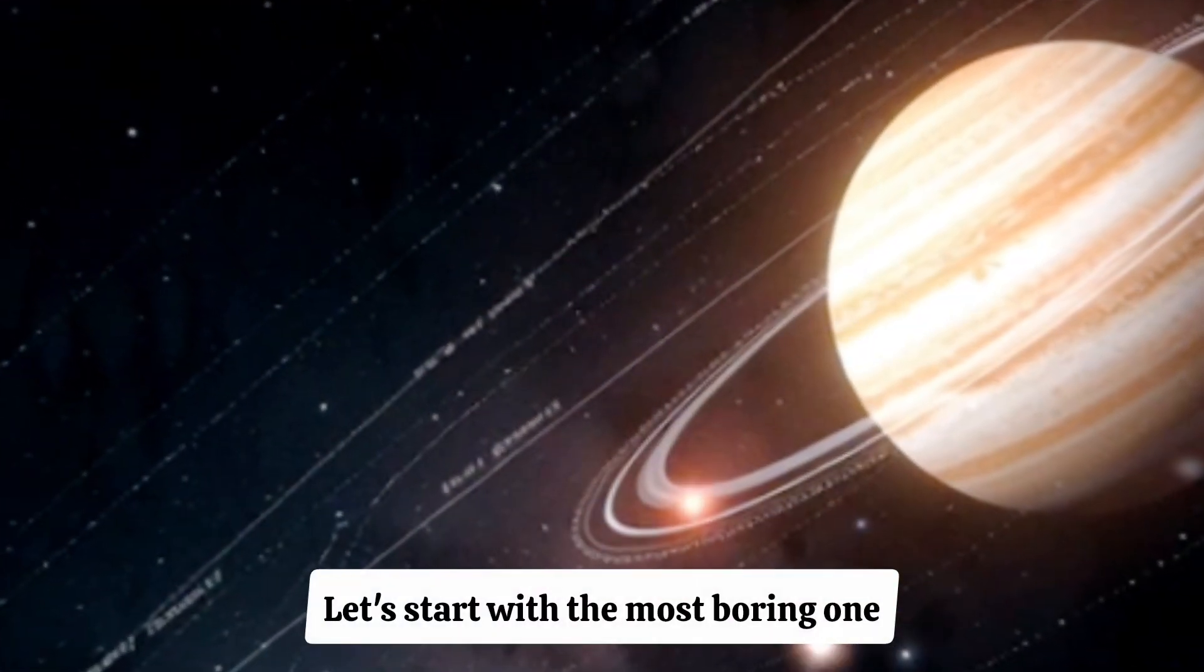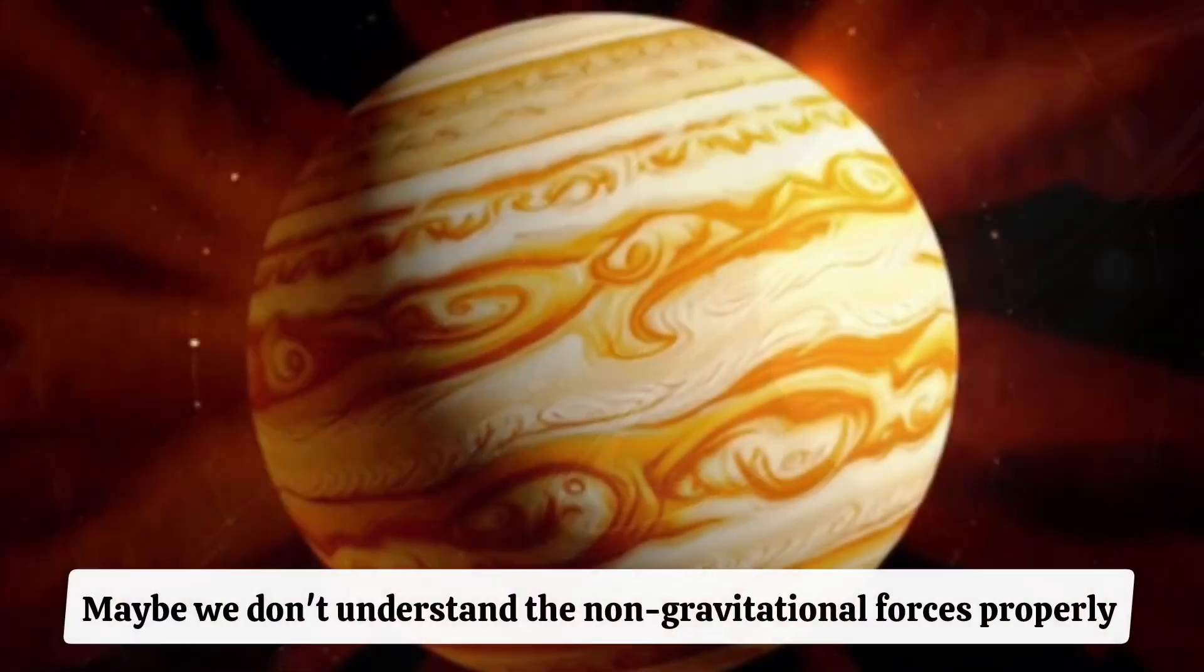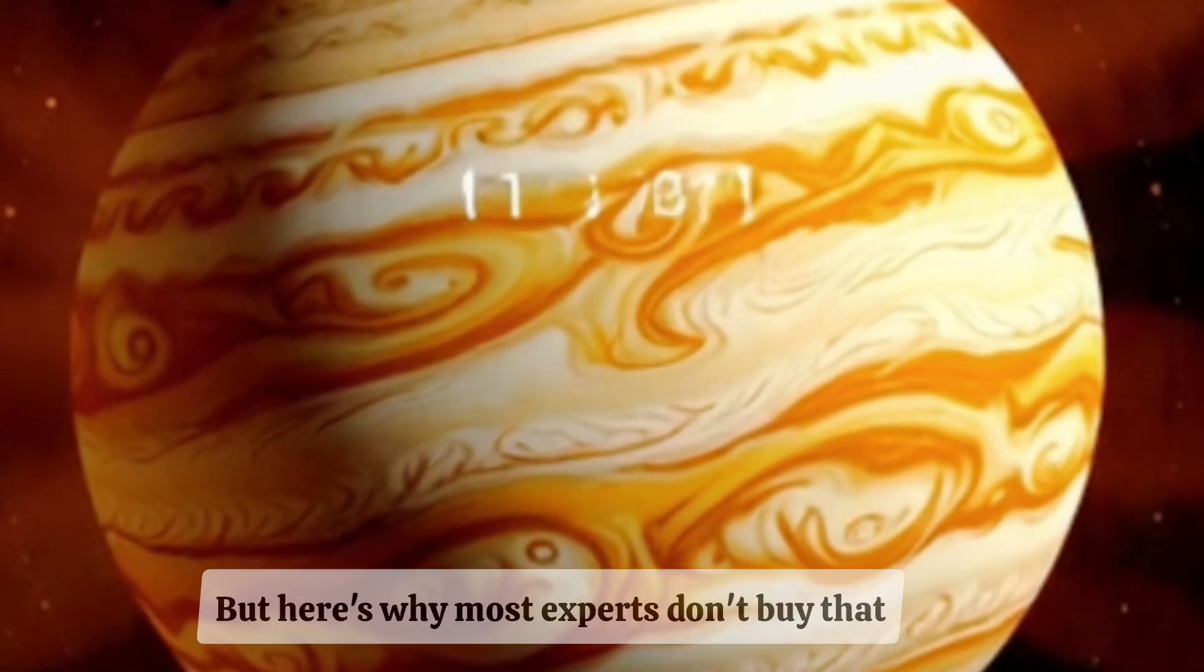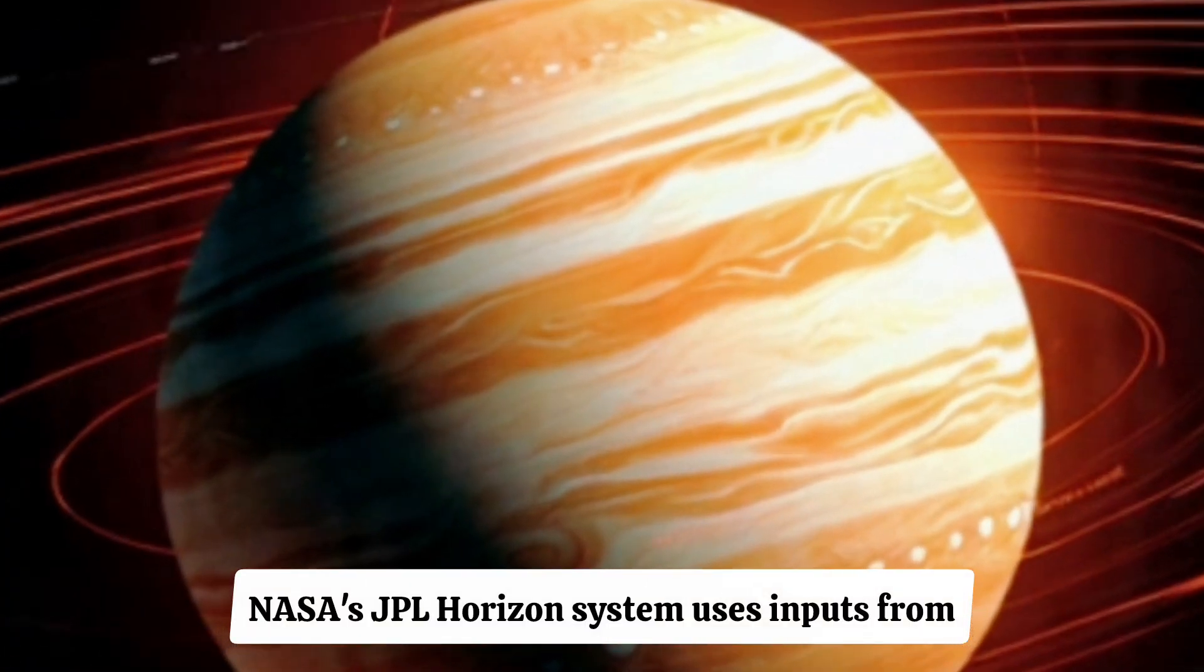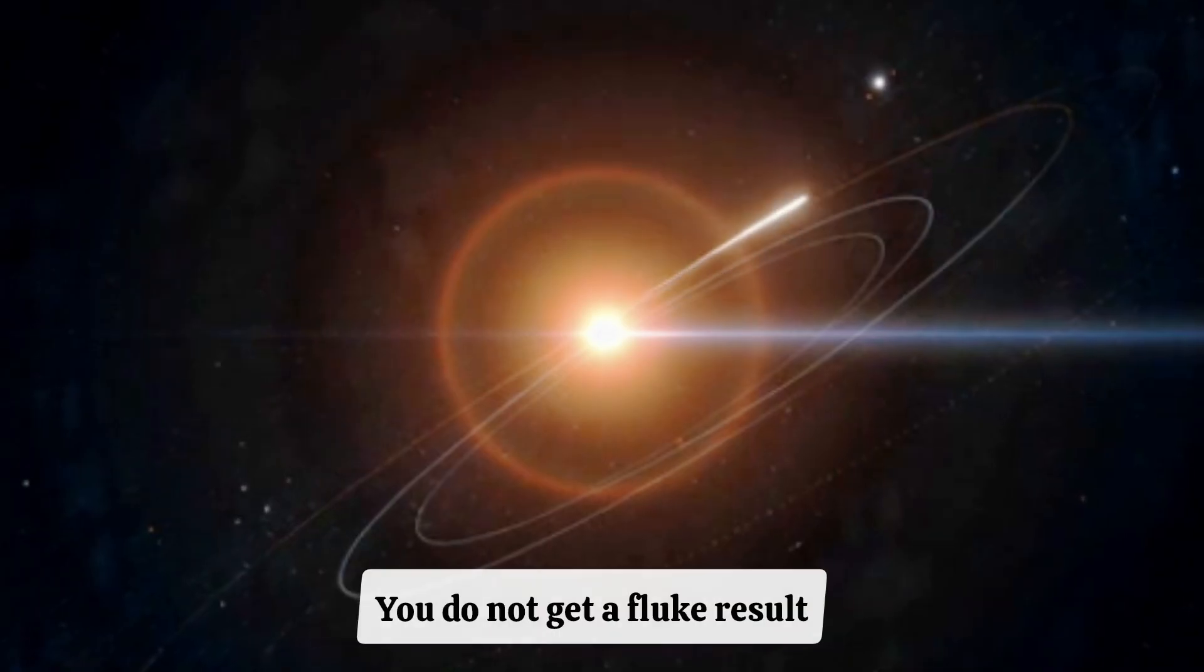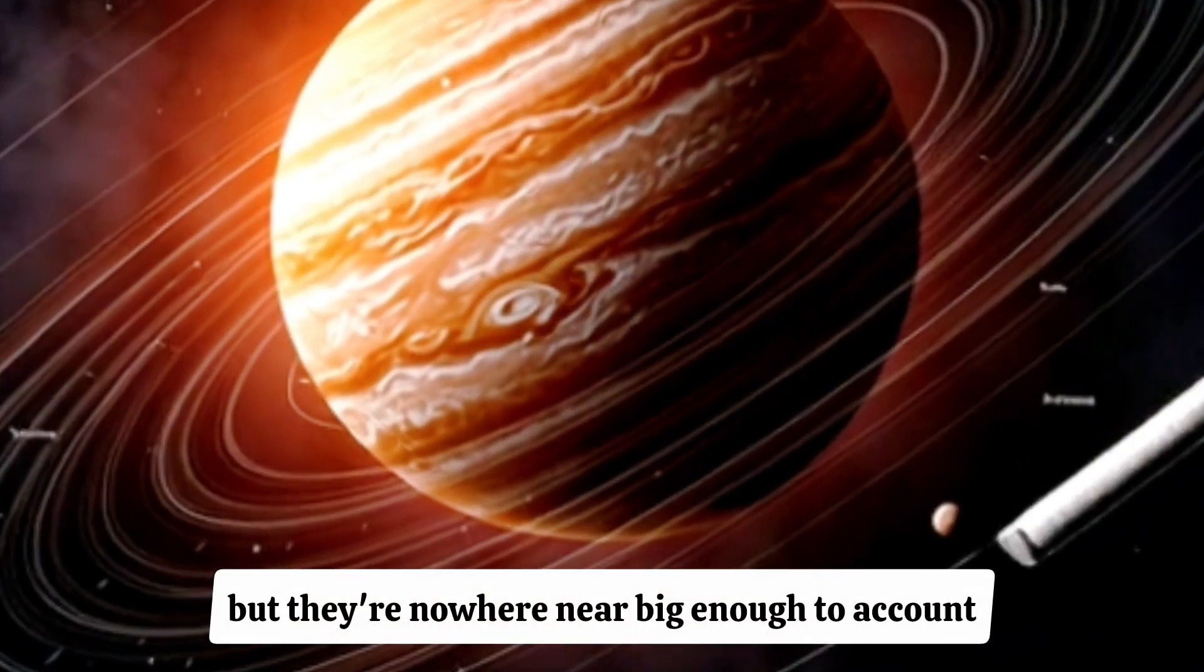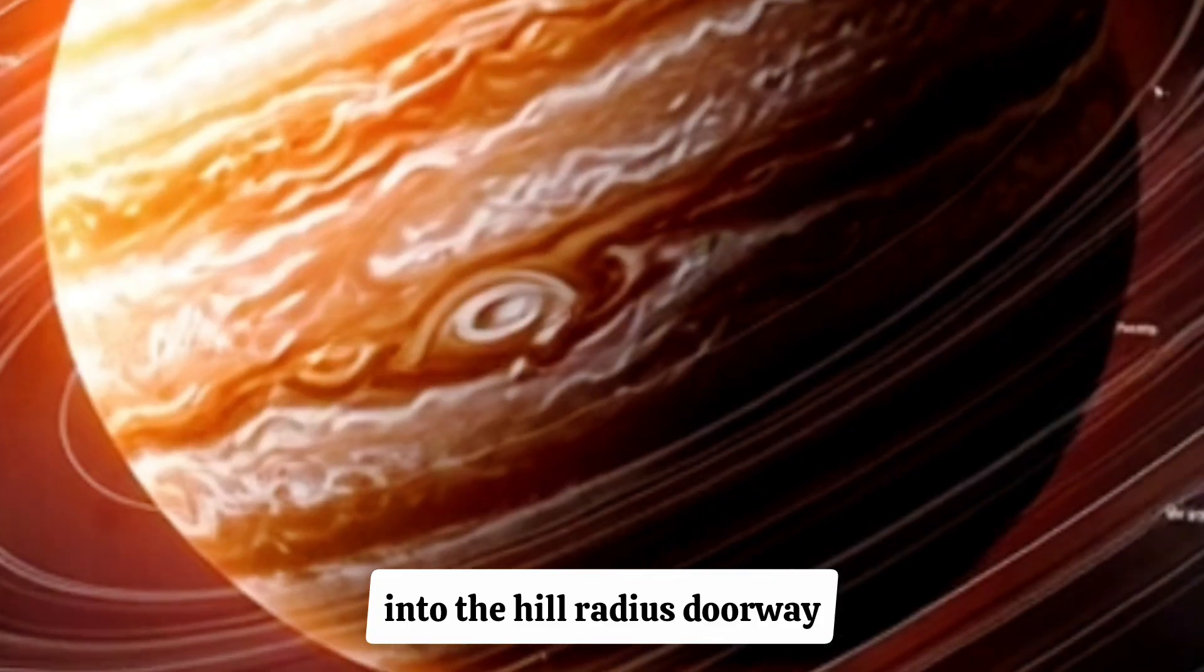Let's start with the most boring one. The calculations are wrong. Maybe the trajectory data is off. Maybe we don't understand the non-gravitational forces properly. Maybe Jupiter's influence is different than expected. But here's why most experts don't buy that. NASA's JPL Horizons system uses inputs from 230-plus observatories worldwide. You do not get a fluke result that hundreds of observatories all accidentally agree on. Error margins exist, yes, but they're nowhere near big enough to account for a perfect 62,000-mile correction right into the hill radius doorway.